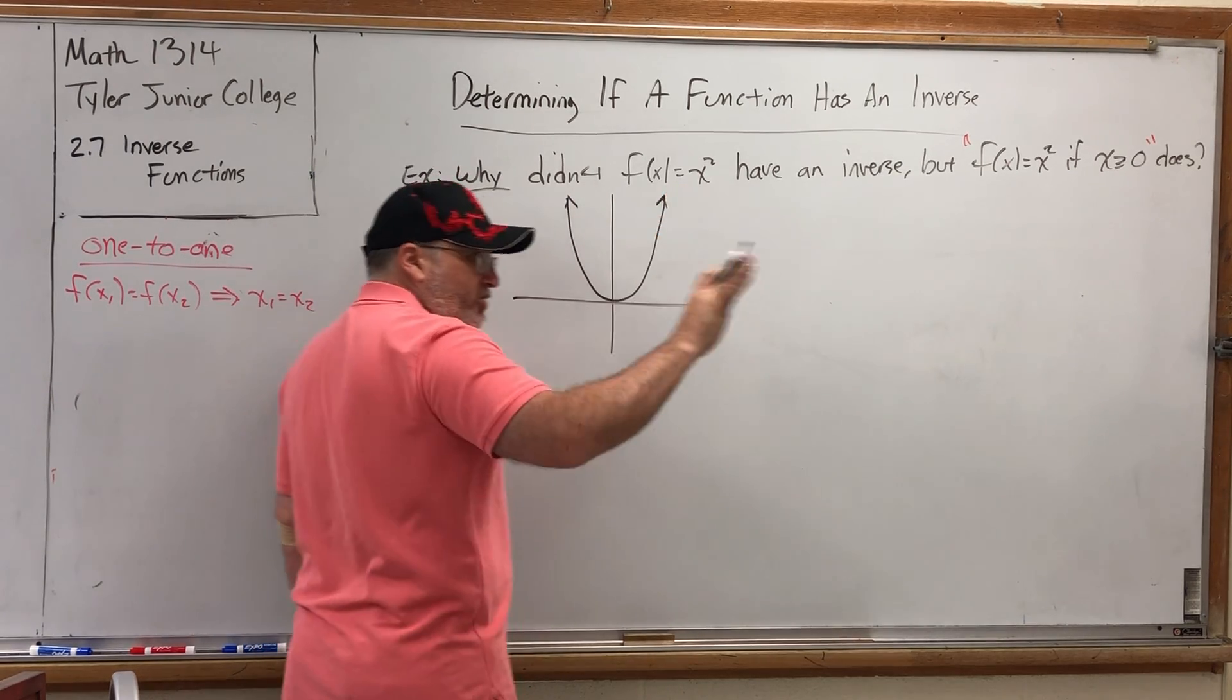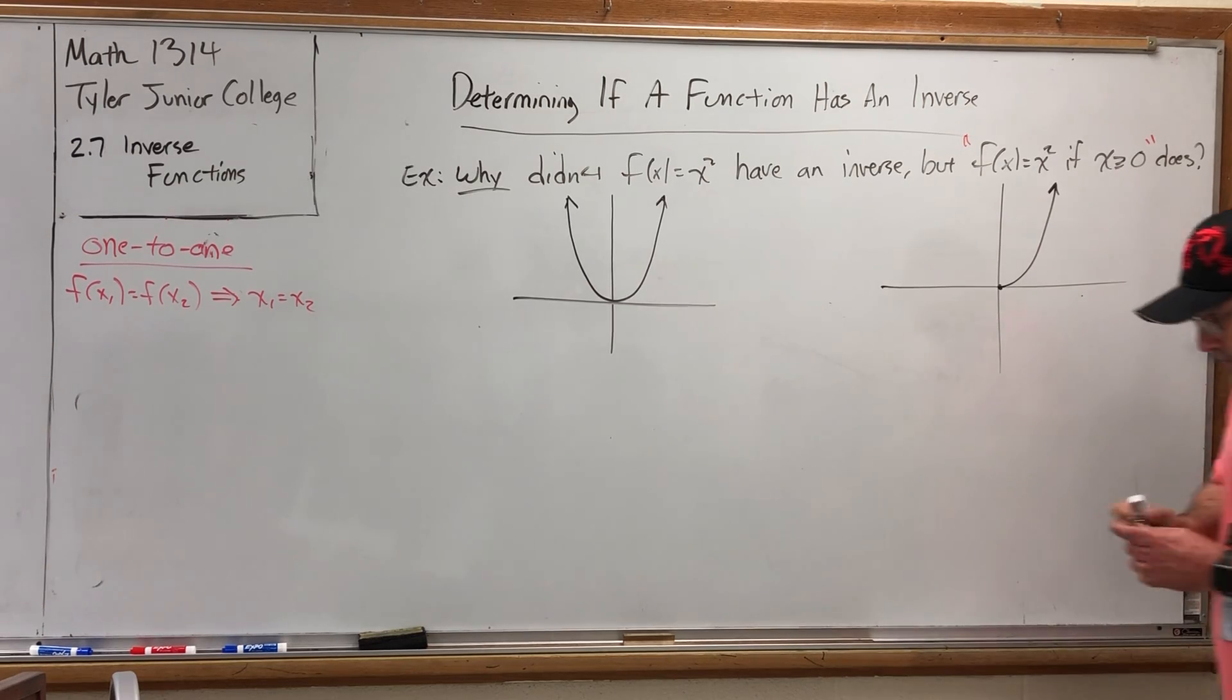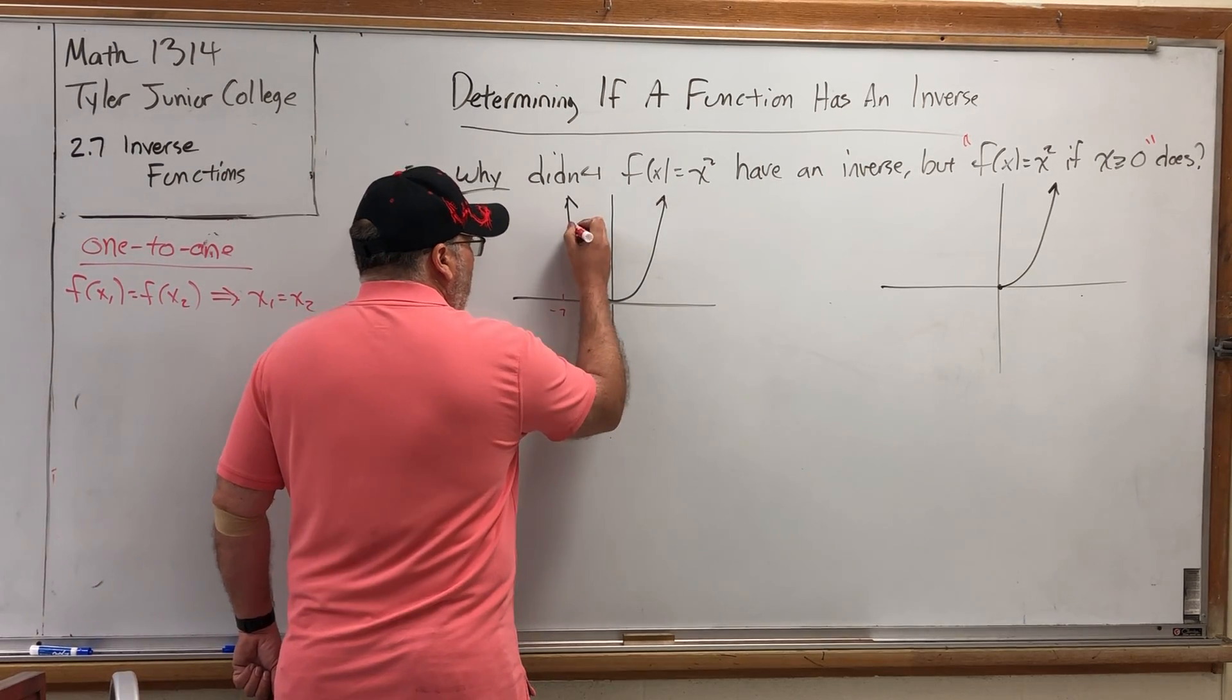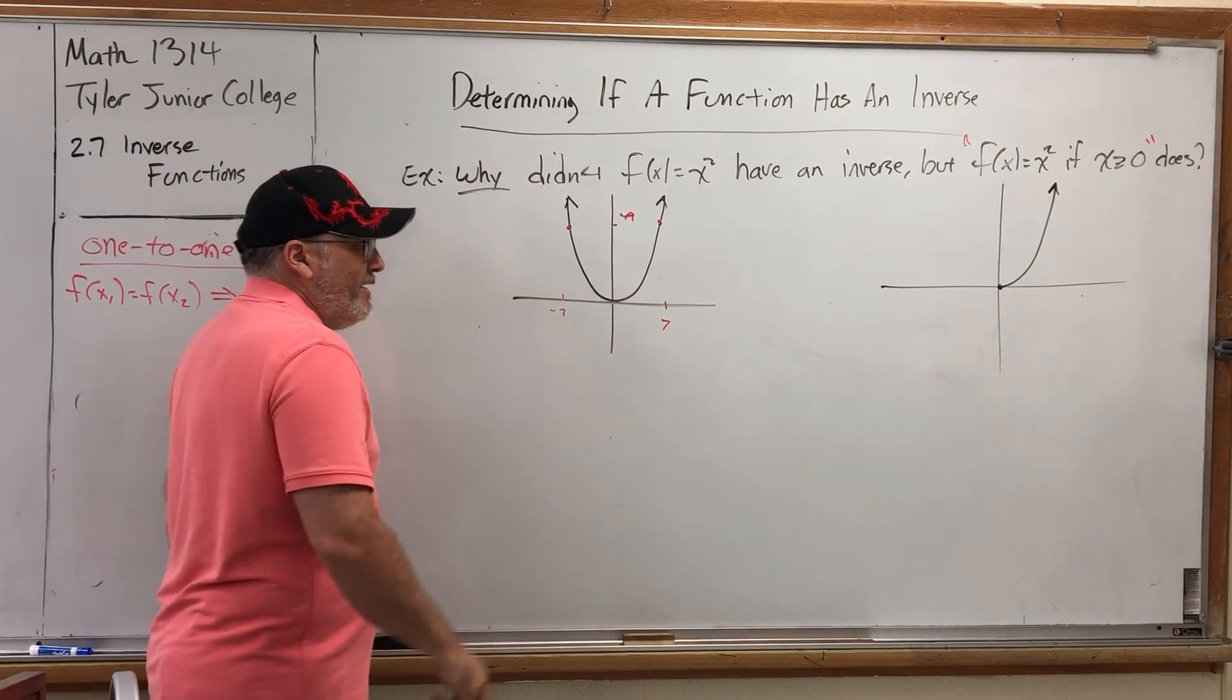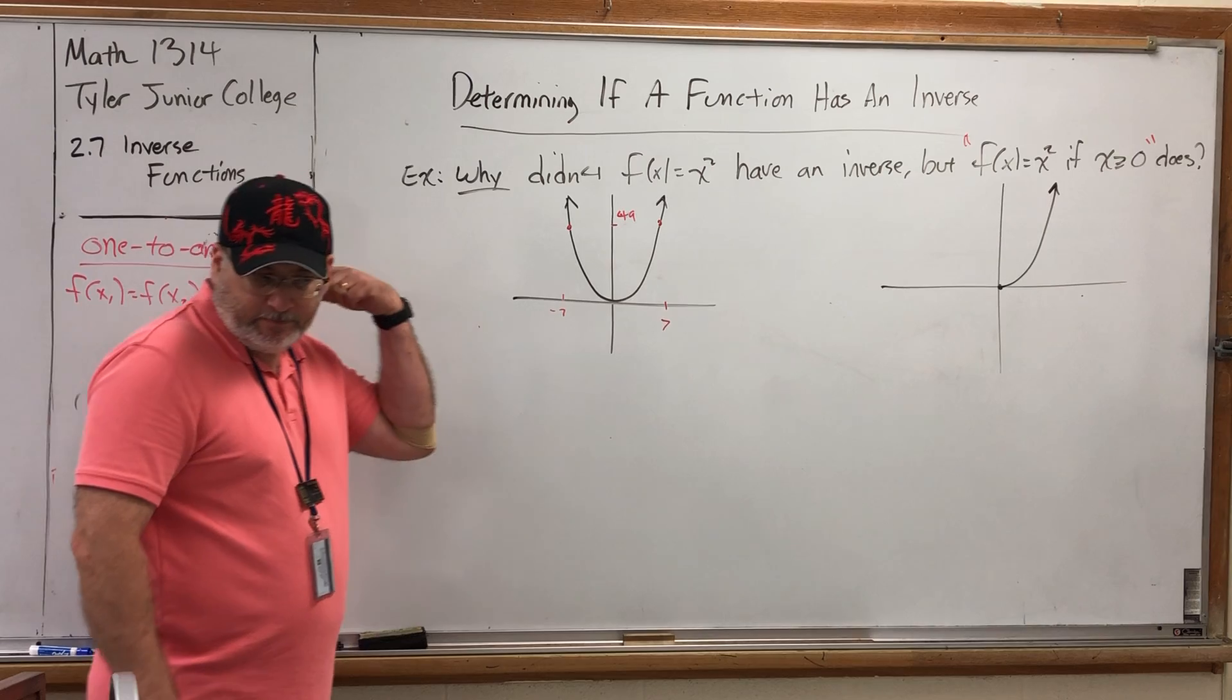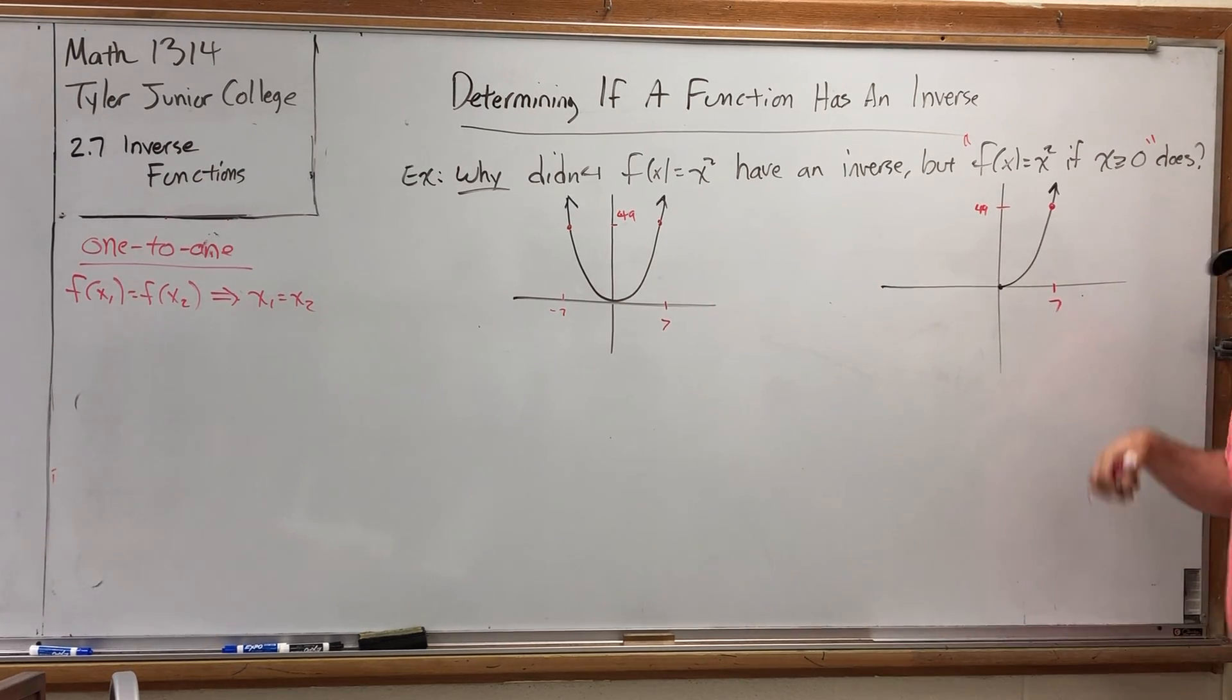There's the squaring function in its entirety. Here's the squaring function when it was limited to non-negative numbers. Visually speaking, what was the problem? Well, the problem here with the 7s was there were two x's that had the same y. But the negative 7 and 7 went up to 49. That was not a problem over here. The only number that went up to 49 in this function was 7.